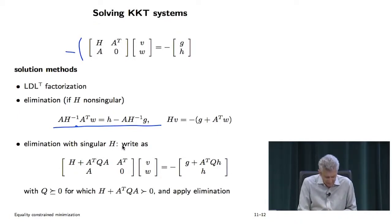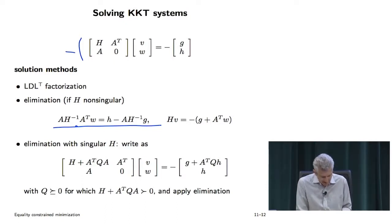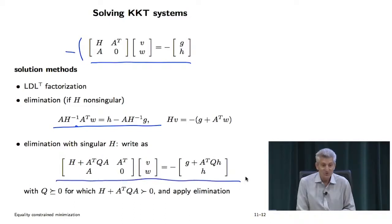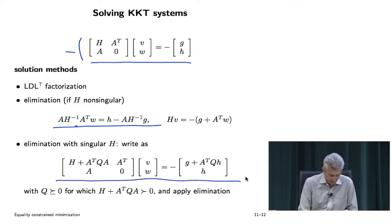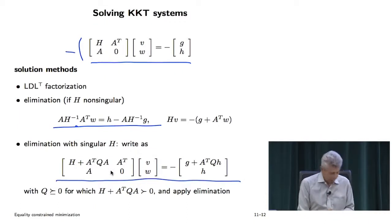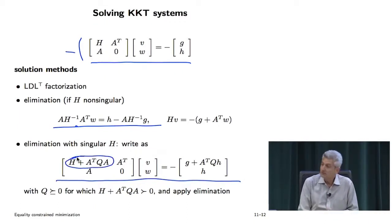If H is singular, there are interesting things you can do — any solution of the modified system is identical to a solution of the original. This allows you to ensure that one block is non-singular, so you can apply elimination. Now we're going to finish with an example that ties a bunch of stuff together, and you'll see something really interesting.